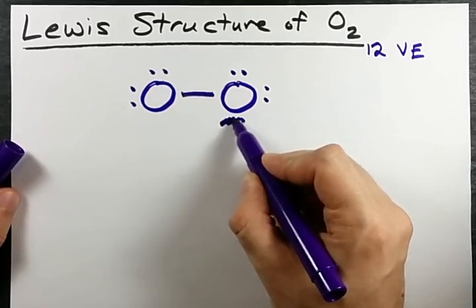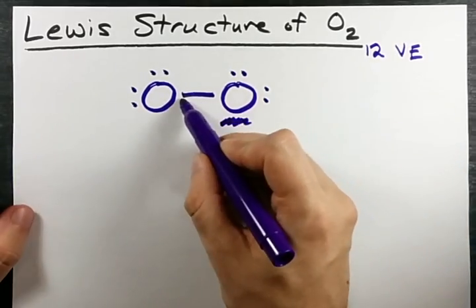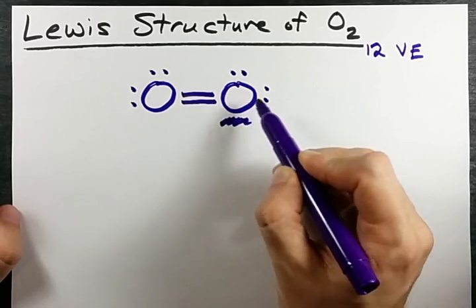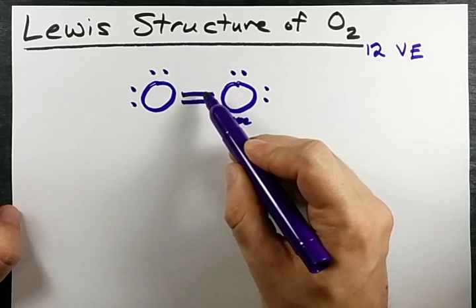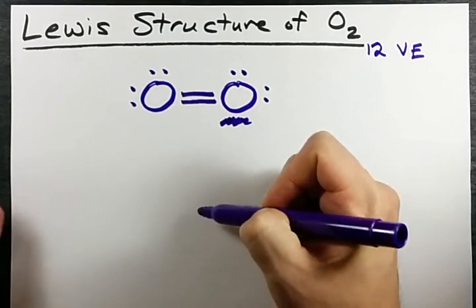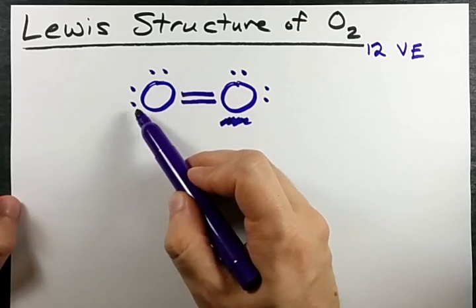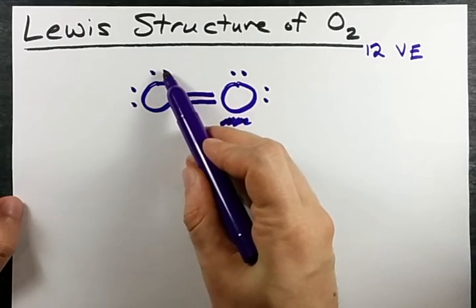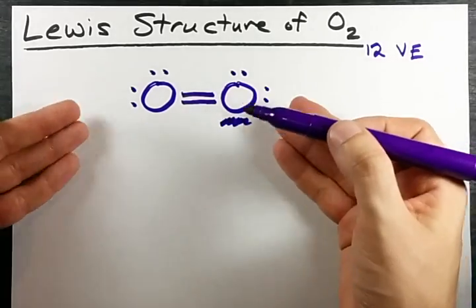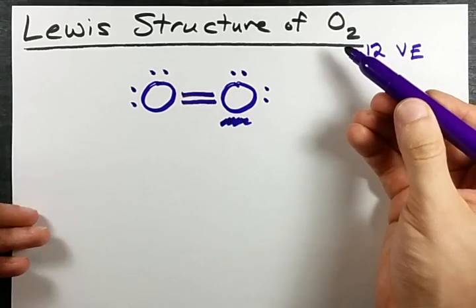we're going to take two electrons from the other oxygen and share them. This oxygen still has eight. One, two, three, four, five, six, seven, eight. Since there are two electrons in each bond. But now this oxygen also has one, two, three, four, five, six, seven, eight. Hey, here we have a legitimate Lewis structure for O2.